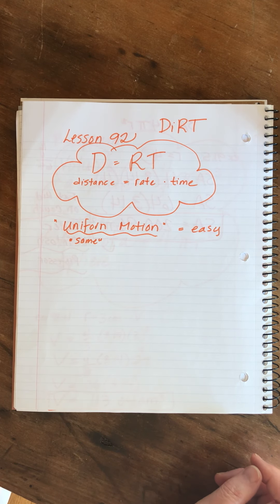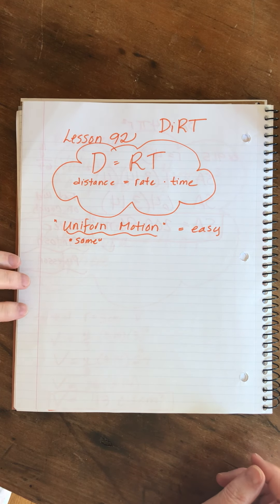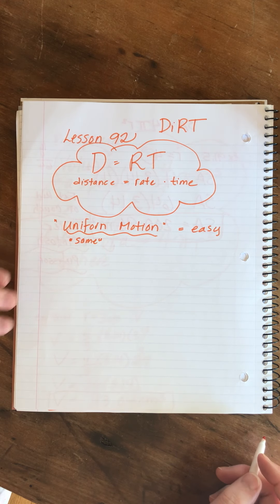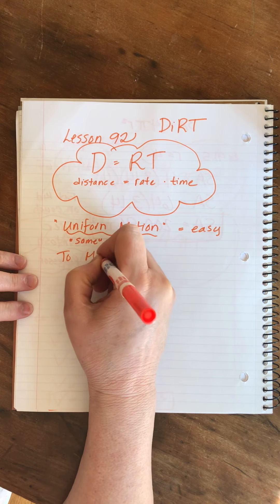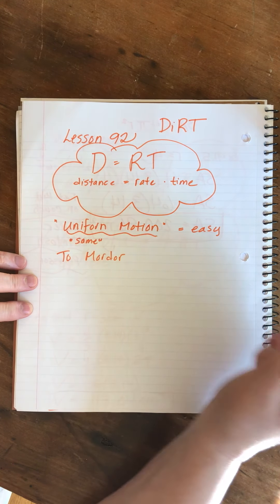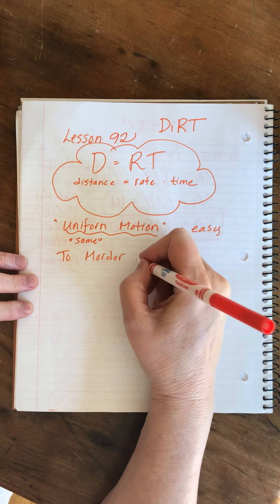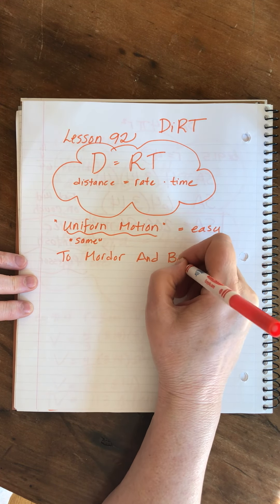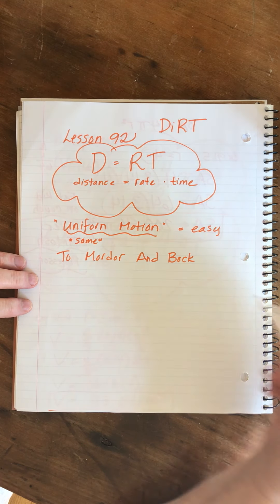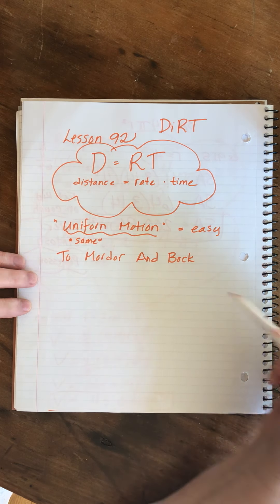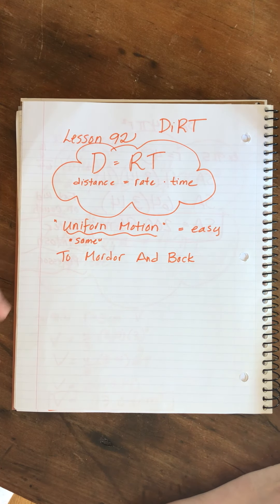So, there are three different categories this year that we're going to learn. And the first one is what we're learning in 92. And that is a scenario that I call to Mordor and Back. You've seen Lord of the Rings. You know what Sam and Frodo have to do. They have to crawl their way to Mount Doom and they have to drop the ring into the fiery pit where it will be melted down. And then, they have to go all the way back to the shire. And they think they're not going to make it. And they think it's a one-way trip. But it's not true.